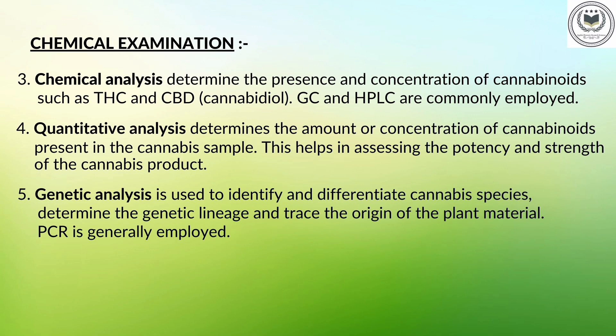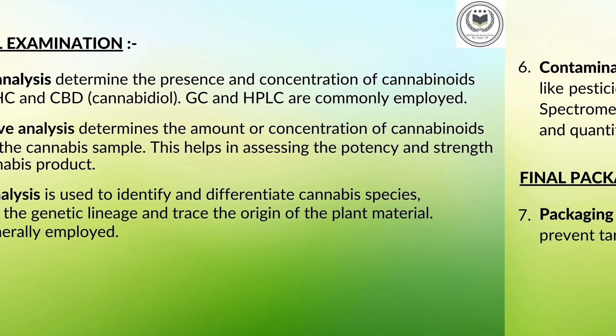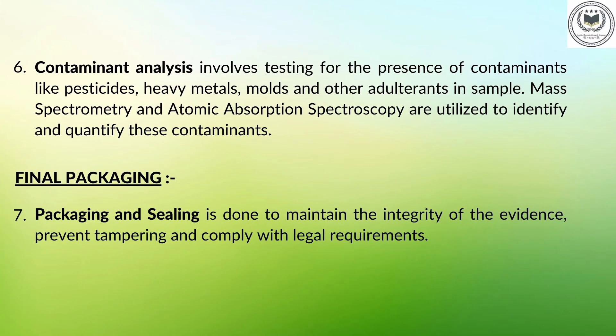Now we will study about the chemical examination of cannabis. After physical examination, the plant specimen is further tested for determining the presence and quantity of cannabinoids present in it. For this process, high pressure liquid chromatography (HPLC) and gas chromatography are used. By quantitative analysis, the amount or concentration of cannabinoids present in the specimen is determined. In genetic analysis, the identification and differentiation between different species of cannabis is done, which also determines the origin of the specimen. This process is done with the help of PCR.